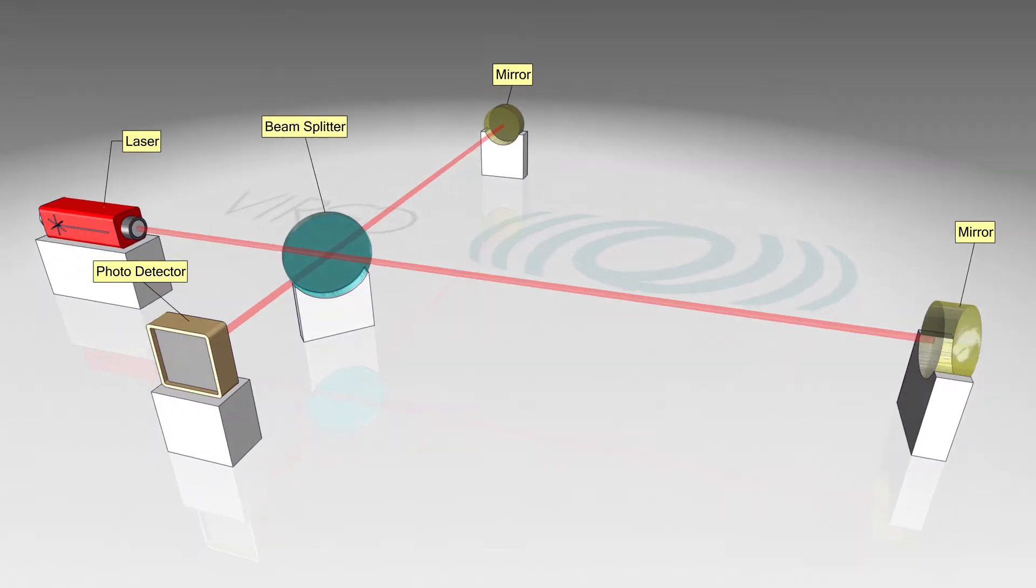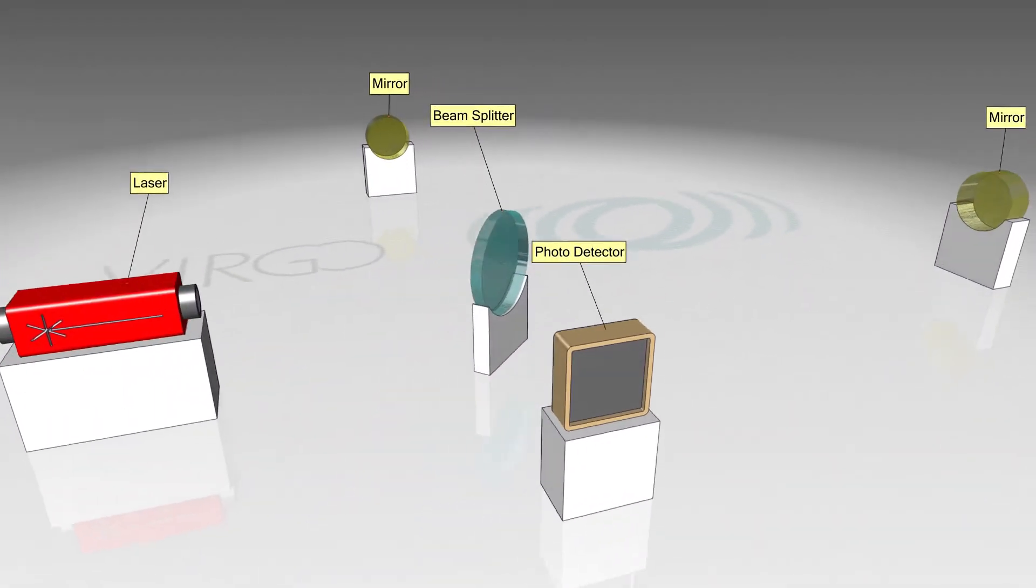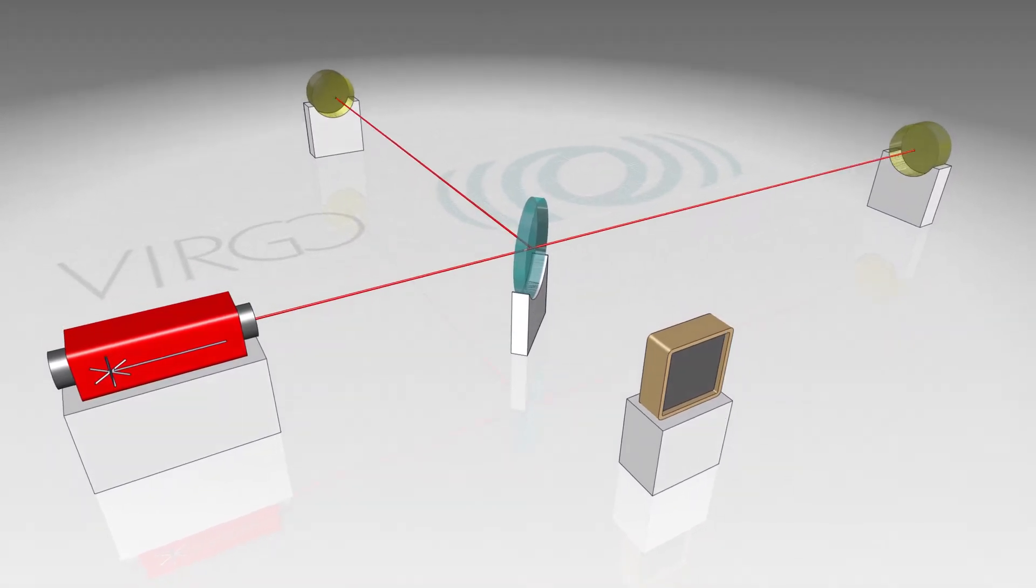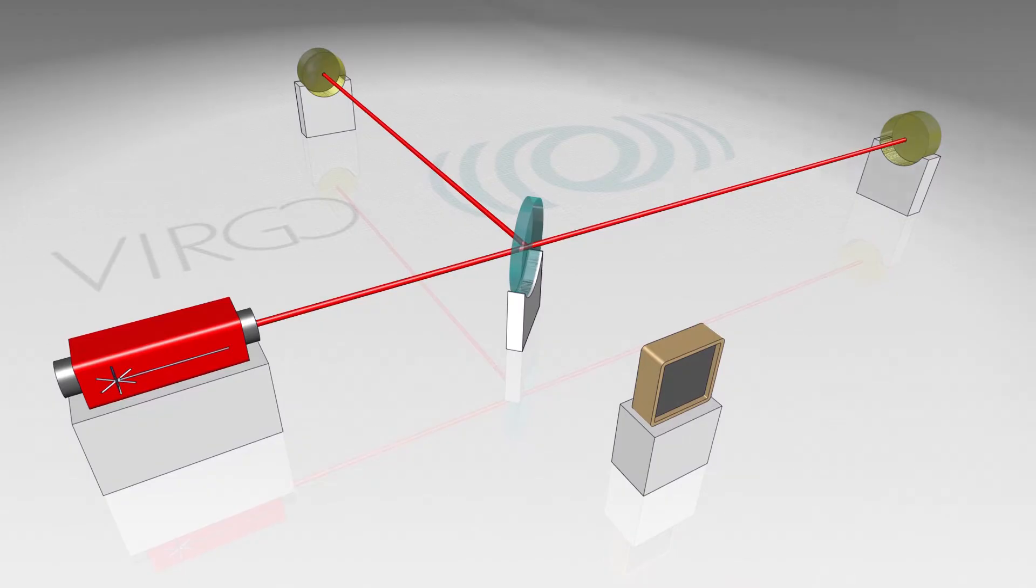If now the distance to each mirror is exactly the same, no light will be seen by the detector. The waves of one beam extinguish those of the other beam. This is called interference.